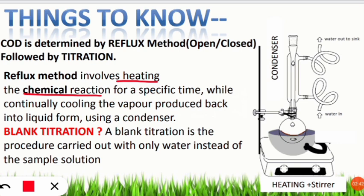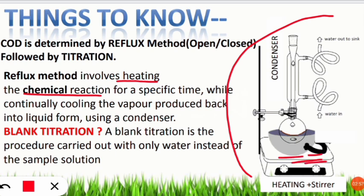The chemical reaction involves the chemicals prepared using the collected water sample. This is the whole setup for the COD reflux method. The heating and stirrer portion has two knobs — one provides heat and the other provides a stirring effect, shaking the chemicals present in this container. This container is known as a round bottom flask.